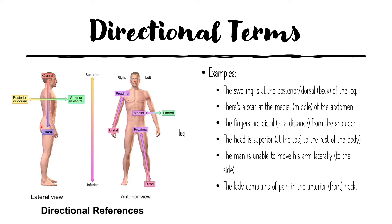Next we have anterior or ventral, which means the front, and the opposite is posterior or dorsal, which means the back. For example, swellings at the posterior or dorsal part of the leg — knowing this term tells you exactly where to look. Similarly, if a patient complains of pain in the anterior neck, you're not going to look at the back.